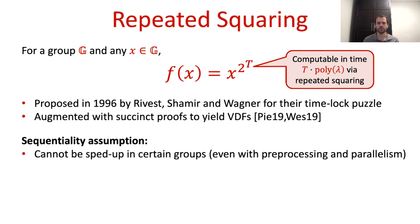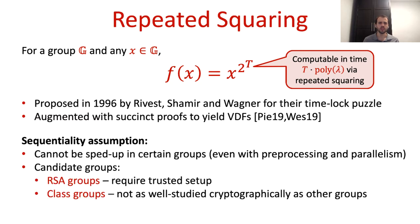Now, the sequentiality of this function is based on the assumption that there are groups in which it is impossible to significantly speed up the function's computation even with pre-processing and parallel processors. As we will later see, a necessary condition for this assumption to hold is that the group's order is unknown. Currently, we have two main candidates for such groups: RSA groups, which are thoroughly studied but typically require a trusted setup to generate their moduli in a way that keeps the order unknown.